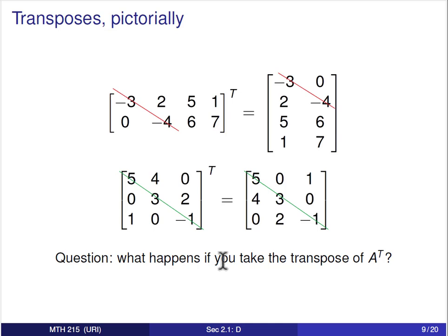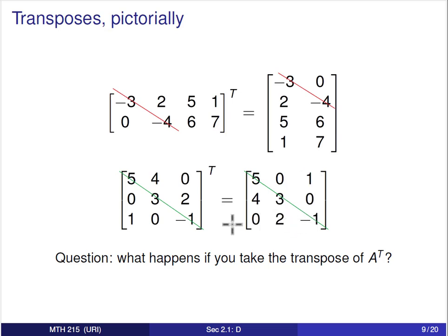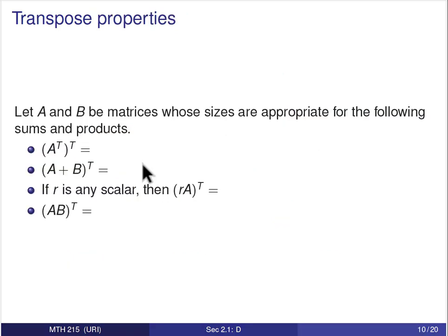What happens if you take the transpose of a transpose? If you take Aᵀ and then take its transpose, you rotate across the main diagonal again — switching the same pairs of entries — and you get back to the original matrix A. So (Aᵀ)ᵀ = A.